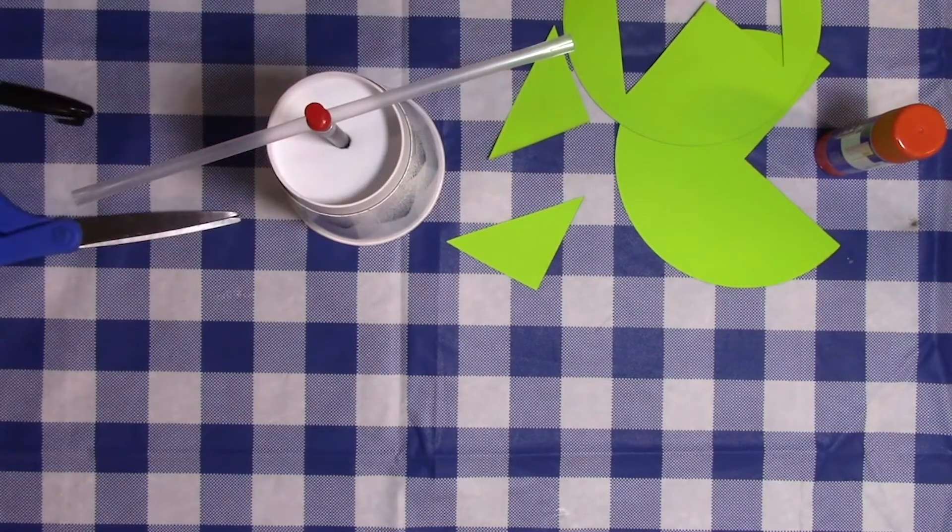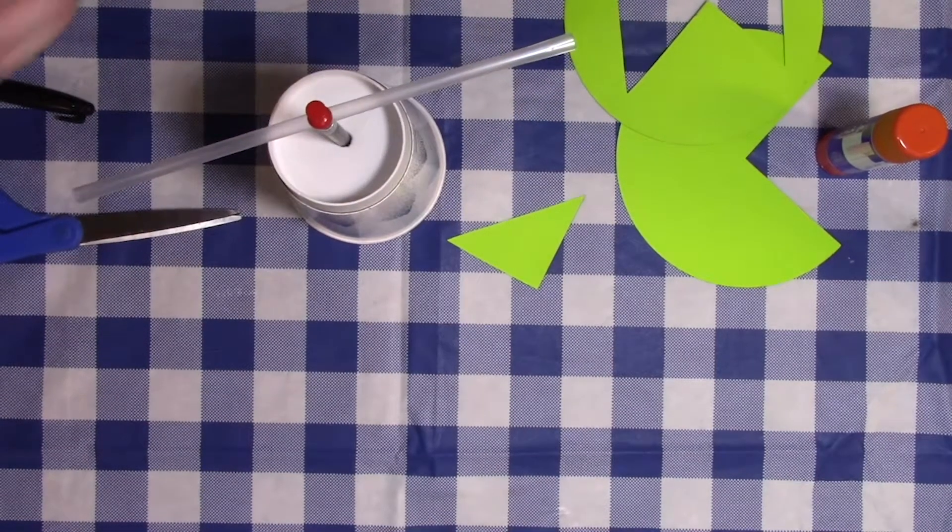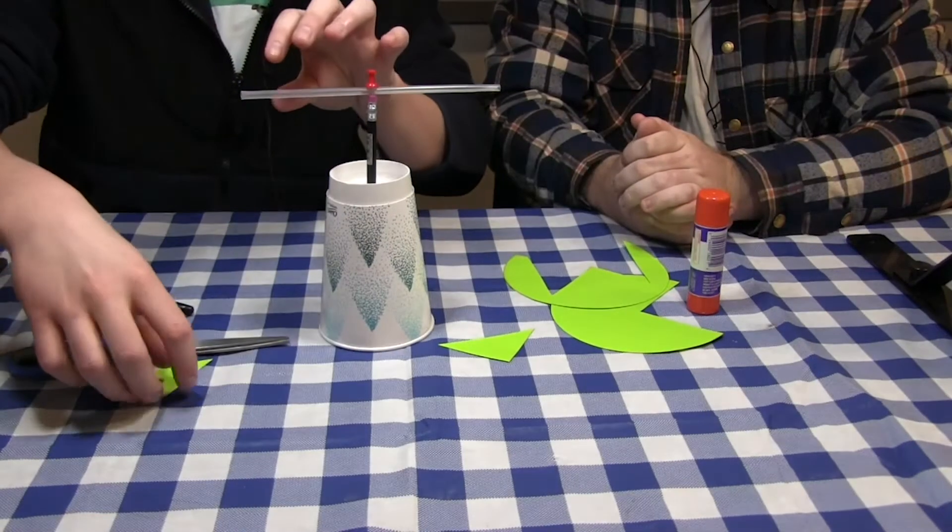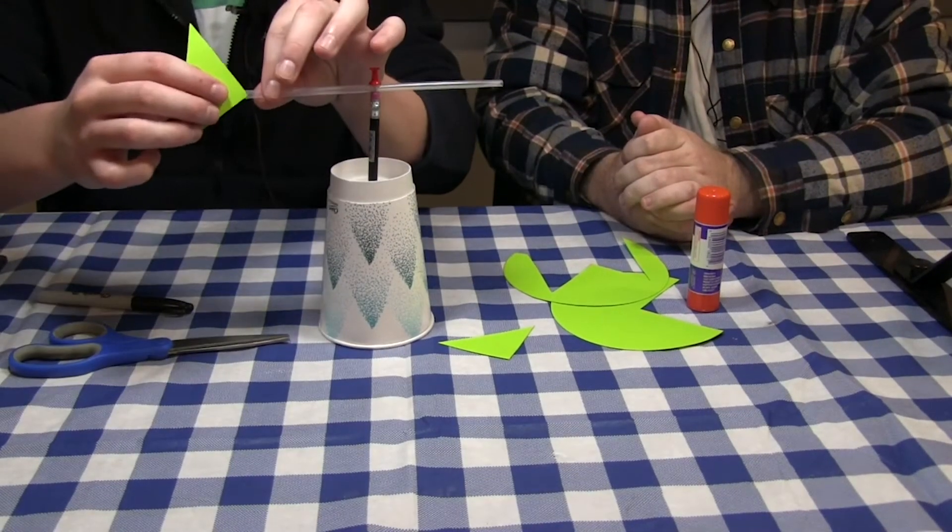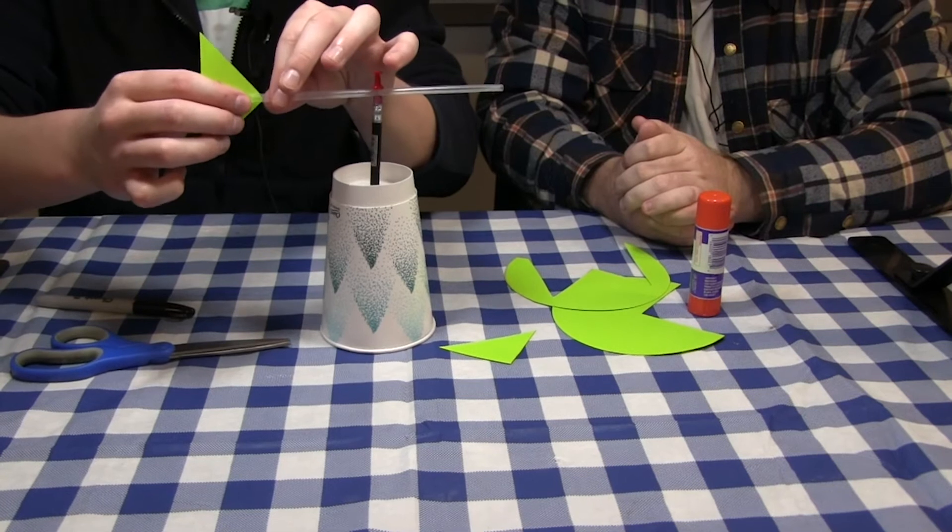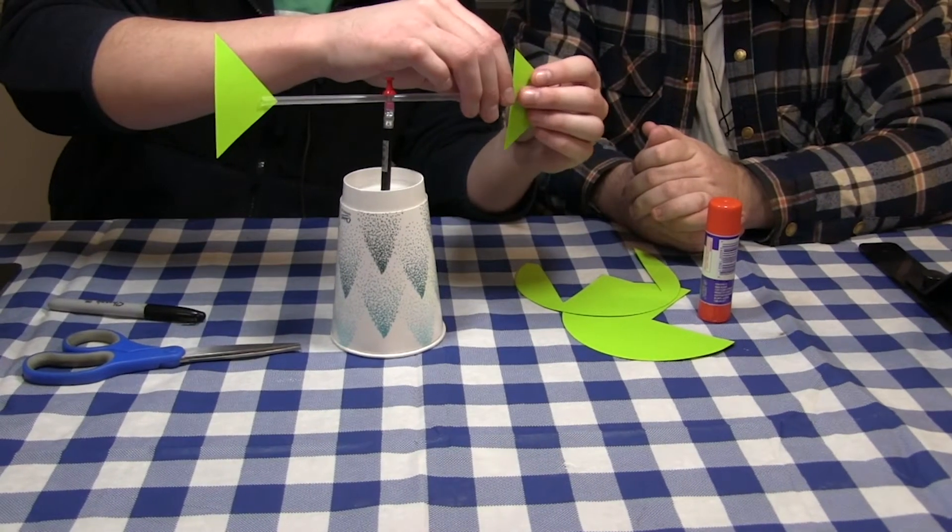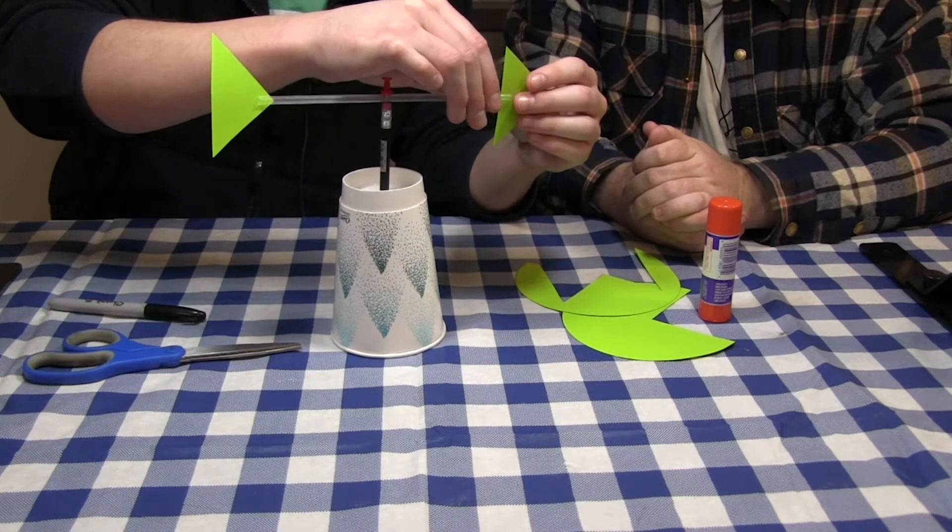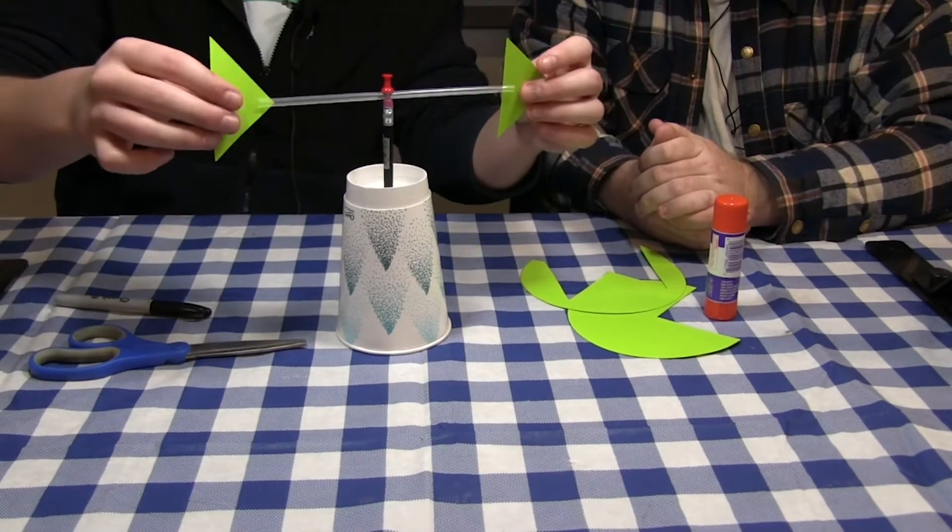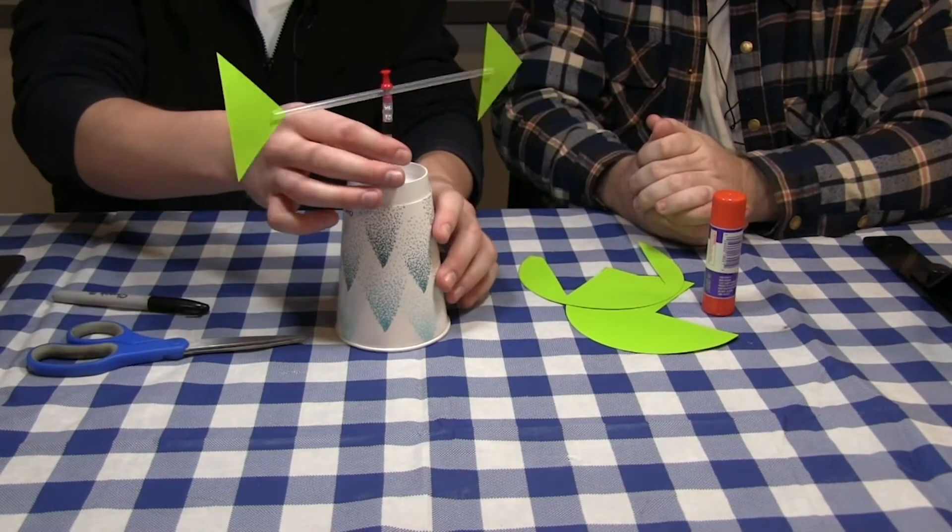Now we can put the construction paper into these slits, like so. And there's our wind vane.